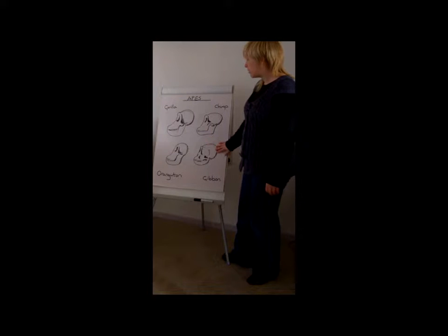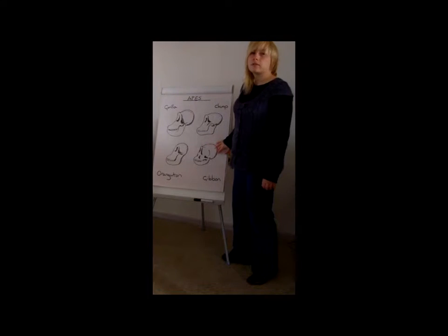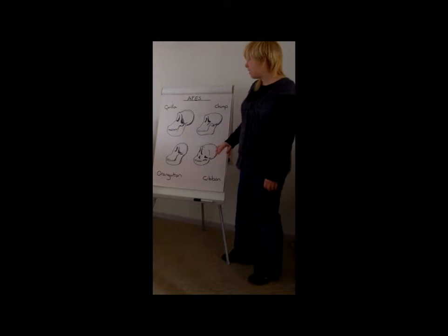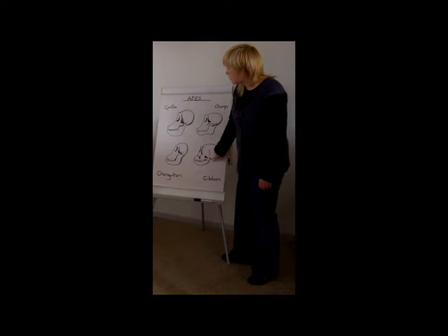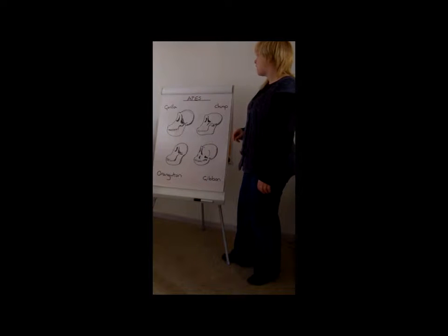We've also got the gibbon skull. The gibbon is the smallest of all the skulls, or out of the apes. There's also more sexual dimorphism between males and females, so the skull is the same size. It's also the roundest out of all the skulls for the apes.